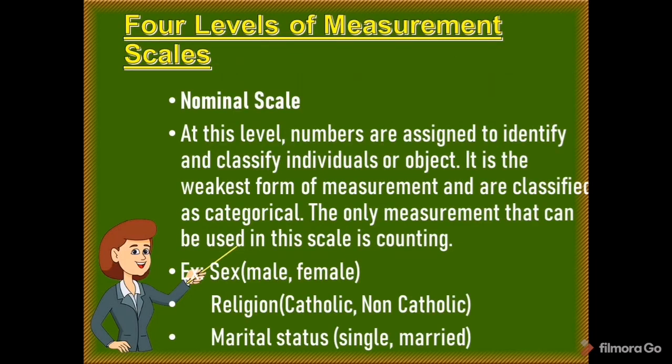Next are the four levels of measurement scales. The first is the nominal scale. At this level, numbers are assigned to identify and classify individuals or objects. It is the weakest form of measurement and is classified as categorical. The only measurement used is counting. Examples are sex (male or female), religion (Catholic or non-Catholic), and marital status (single or married).